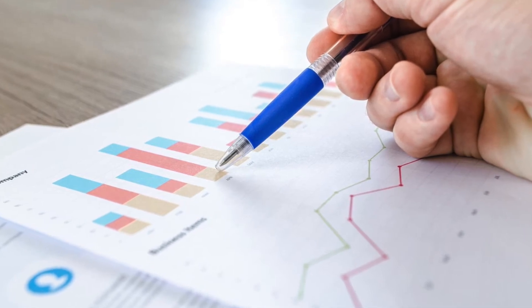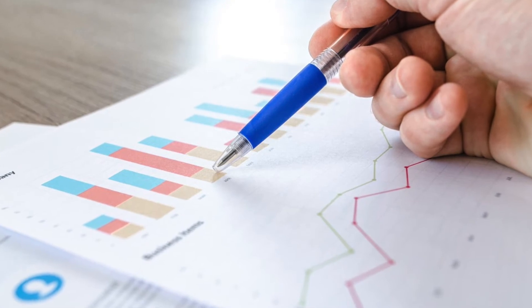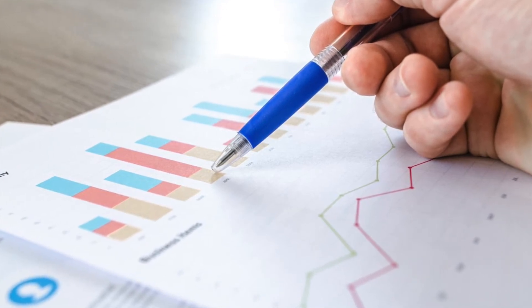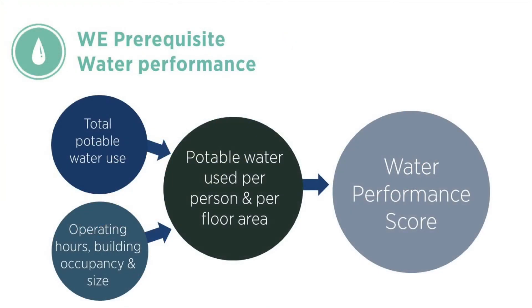Reclaimed water can be included and would offset water from the potable water supply system. The water performance score factors in the amount of potable water use per person and per gross floor area. Water use is first adjusted based on operating hours, and then the project's daily water consumption per occupant and daily water consumption per gross floor area are input into the water scoring function for the specific project type to produce a water performance score.